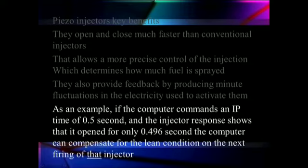As an example, if a computer commands an injection pulse time of 0.5 seconds and the injector response shows that it opened only for 0.496 seconds, the computer can compensate for the lean condition on the next firing of that injector. This is very beneficial for quick response and providing greater efficiency for the engine.